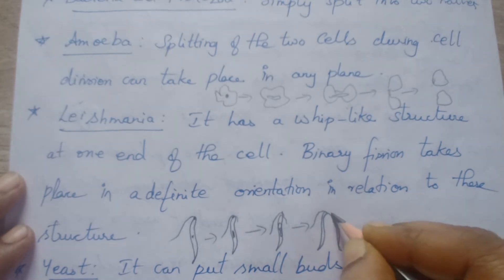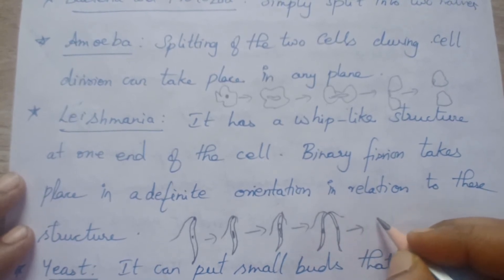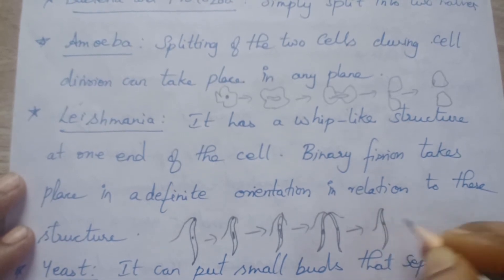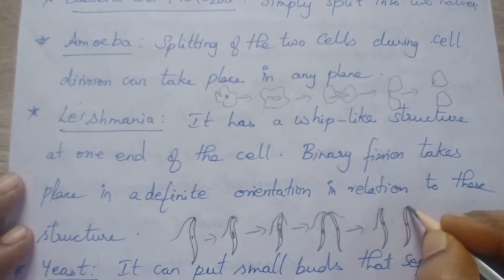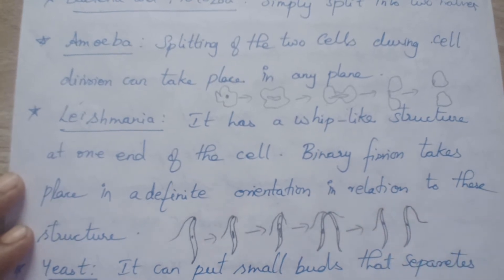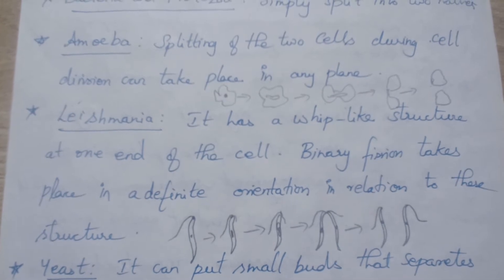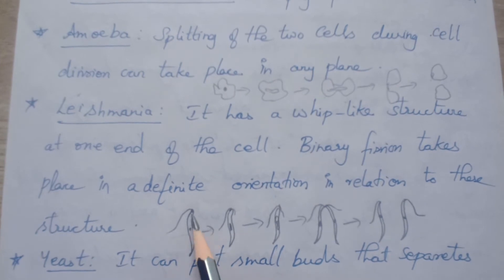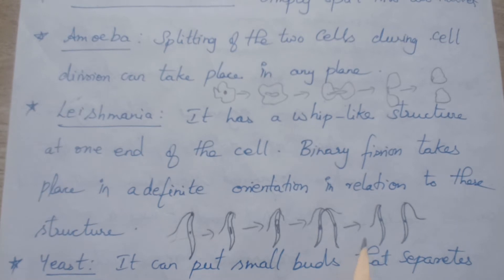The nucleus separates and gives rise to new individuals — one nucleus with one whip and one more new organism with a whip. This is how it splits in a vertical manner, in one of the orientations. It cannot split in other ways since it has a whip at one end. So Leishmania follows binary fission with a definite orientation in splitting.